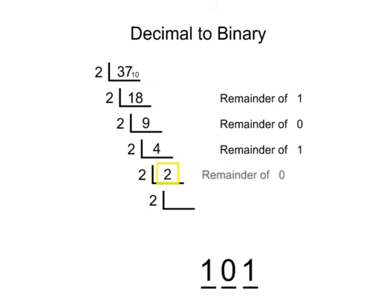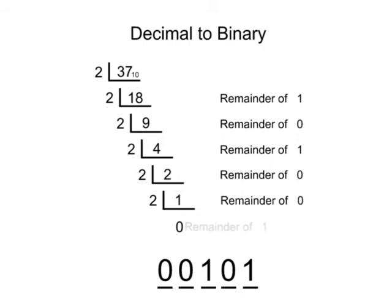Applying this divide by 2 process to each new calculated quotient derives the remainders that become the zeros or ones used to create the binary string. Continuing until the quotient is 0 and can no longer be divided by 2 completes the conversion process and you have your binary number.